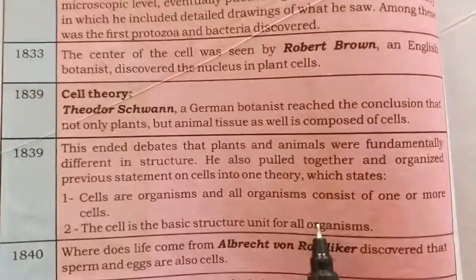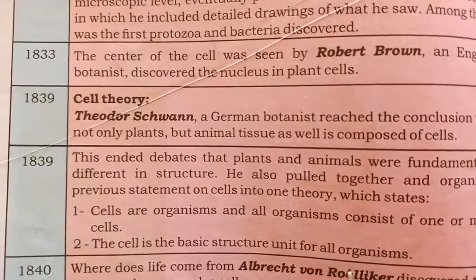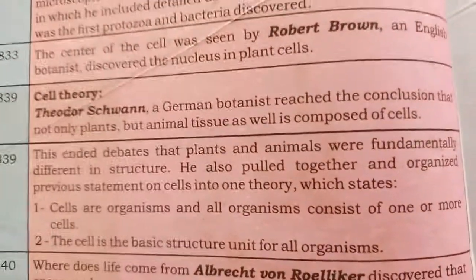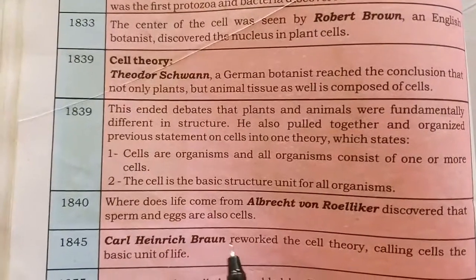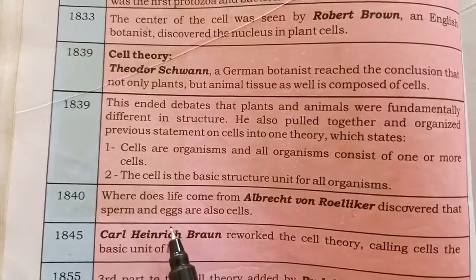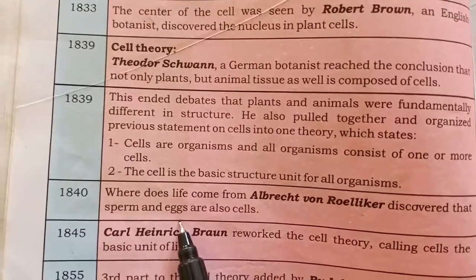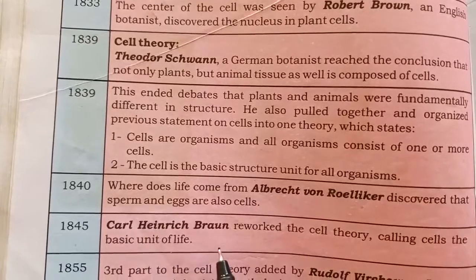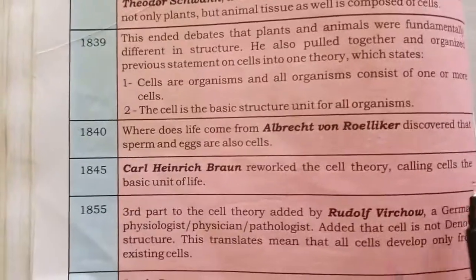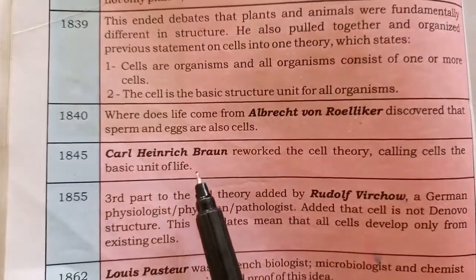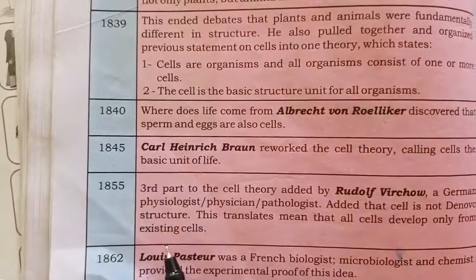If it is a living thing, it will be made of cells — whether unicellular with one cell, or multicellular with many cells. In 1840, scientists first discovered that sperm and egg are also cells. In 1845, Heinrich discovered cell theory, stating that the cell is the basic unit of life.